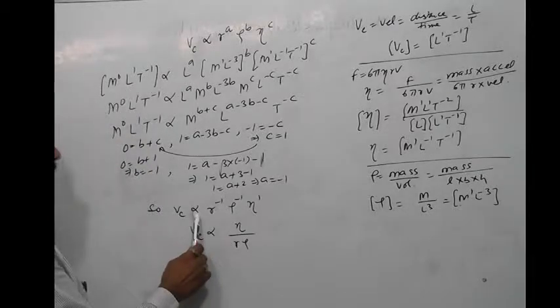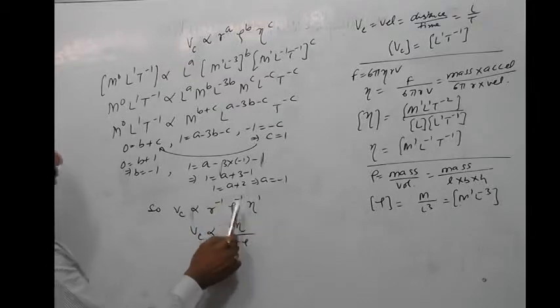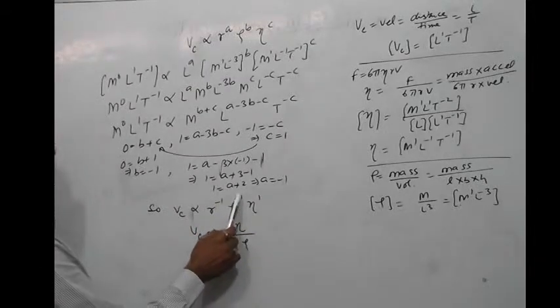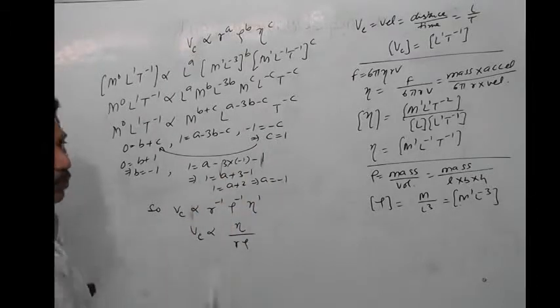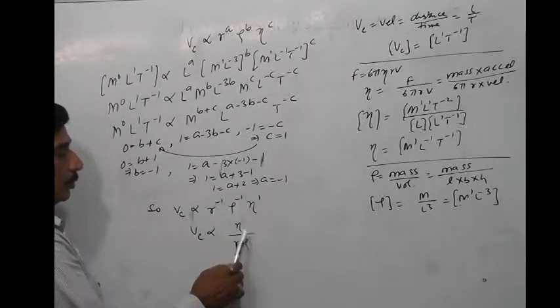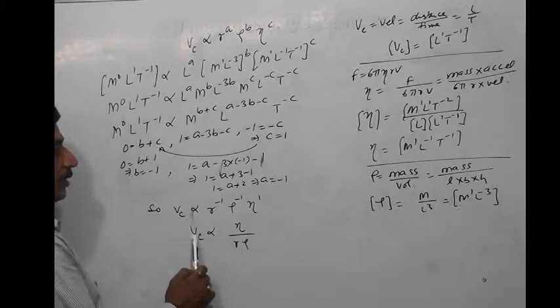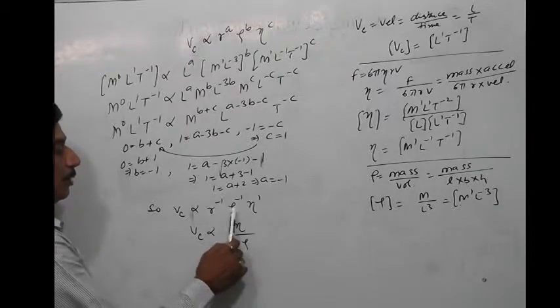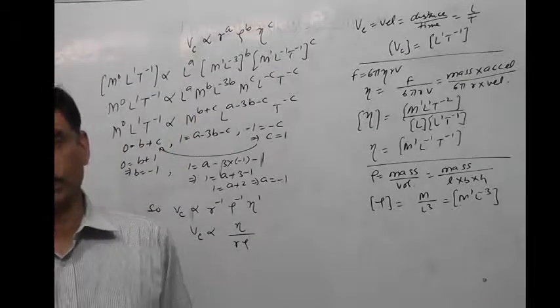Vc is directly proportional to r to power A. A is minus 1, rho to power B, B is minus 1, eta raise power C, C is 1. R and rho go to the denominator. It is Vc, critical velocity, proportional to eta upon r rho. This is the required expression.